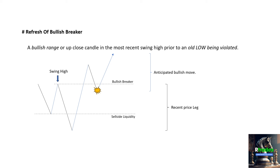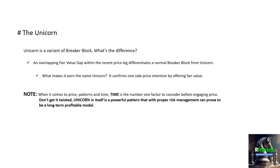The Unicorn model, or Unicorn pattern, is a variant of a breaker block. What differentiates it from a normal breaker block? It is an overlapping fair value gap within the breaker block zone that differentiates a normal breaker block from the Unicorn.